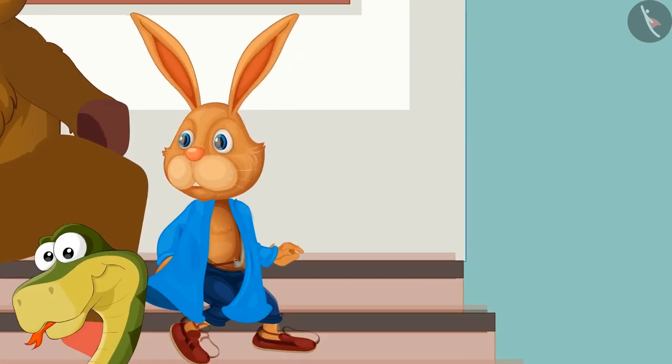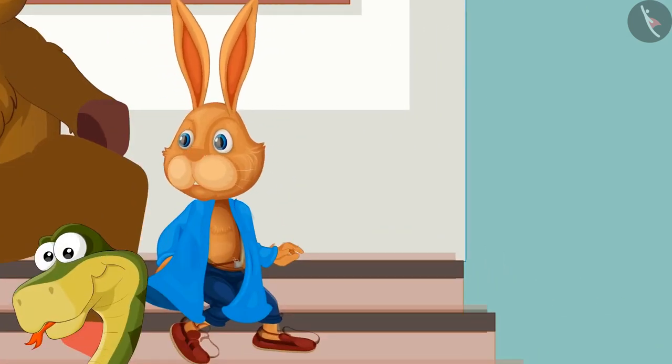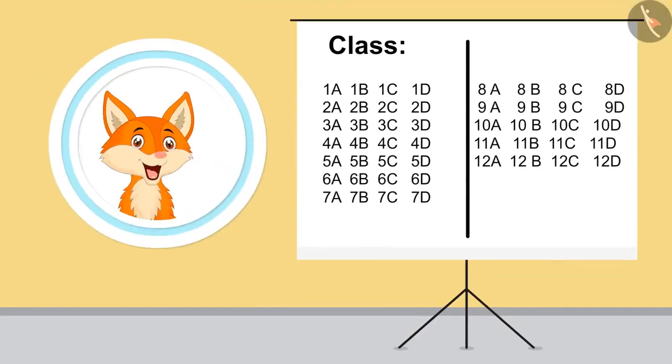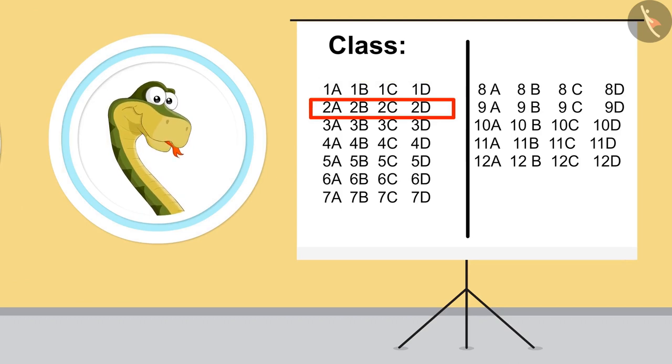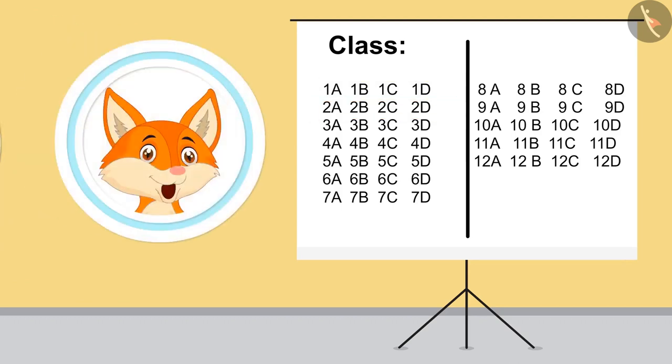Wow, again alphabets and numbers together. Do you remember when we were in school, how our classes were named? Yes, yes. 1A, 1B, 1C and 1D. Then 2A, 2B, 2C, 2D. Yes, through 12th grade, all classes are named like this with numbers and alphabets together.